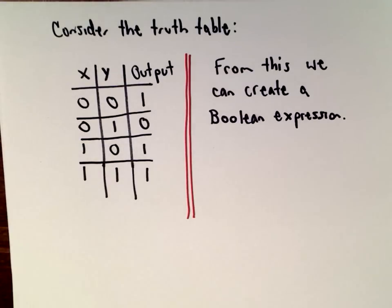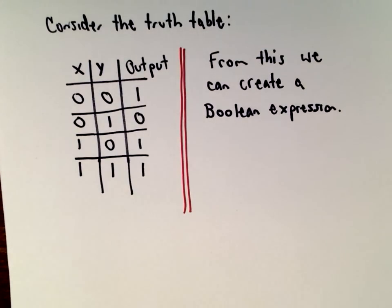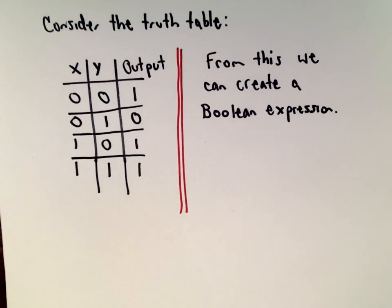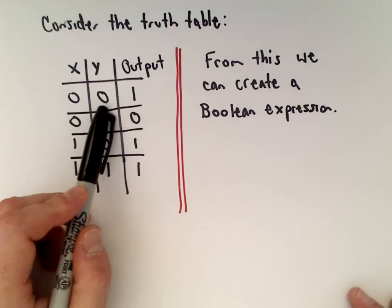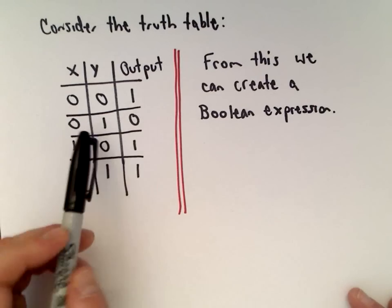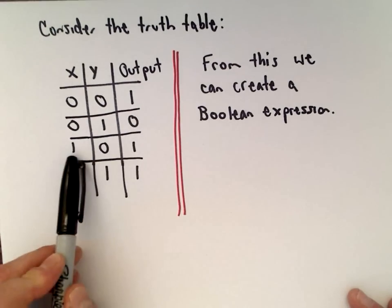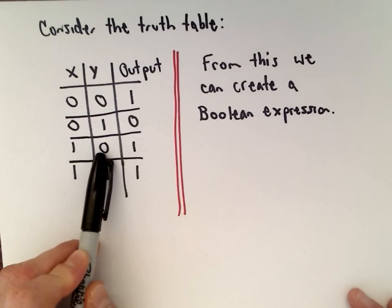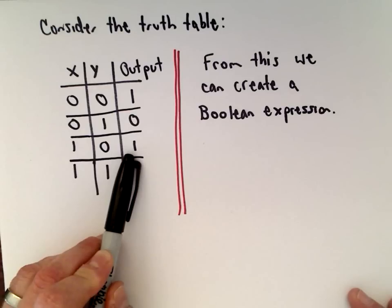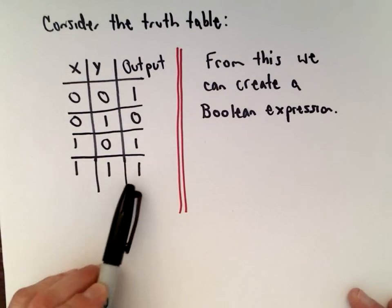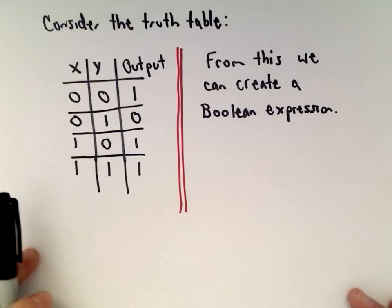It's really quite interesting — something very simple in the way it works but kind of neat. So suppose we've got the following truth table: if both x and y are 0, we want an output of 1. If x is 0 and y is 1, we want an output of 0. If x is 1 and y is 0, we want an output of 1. And if x is 1 and y is 1, we want an output of 1.